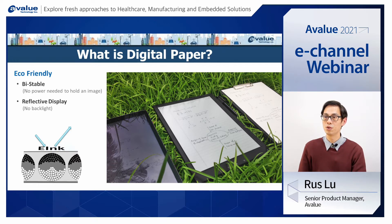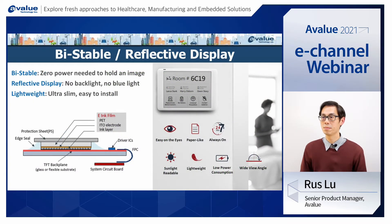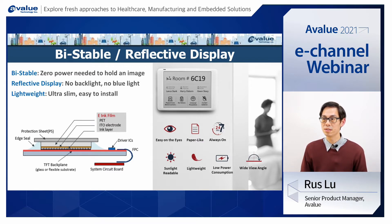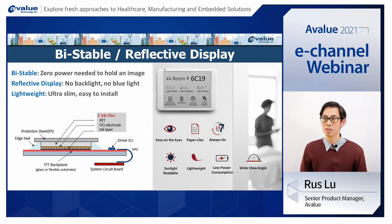Let's check what are the features and benefits of this digital paper technology. There are three main features and benefits for e-ink panel. First, it has a bi-stable structure. As you can see on the screen, there is a very ultra-slim film, and you can imagine there are a lot of colored balls — black balls and white balls inside. We use the driver IC to drive the balls up and down to show what we need to show on the display. This bi-stable structure is very important because there is no power consumption when there are no screen changes.